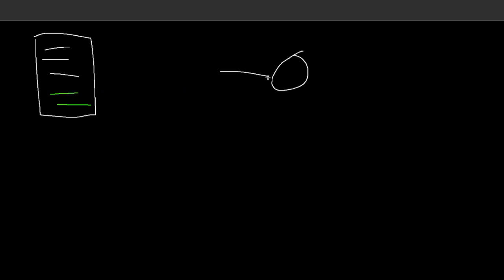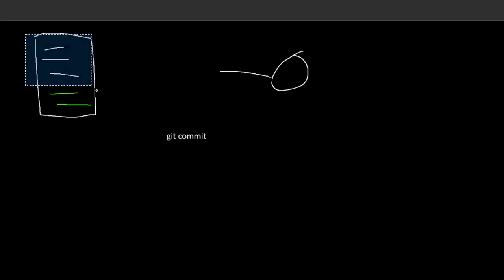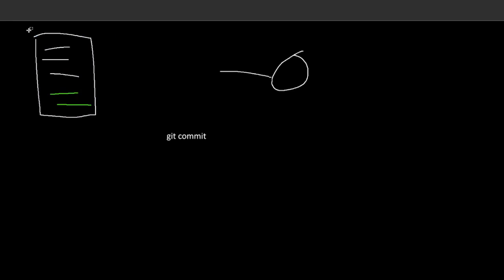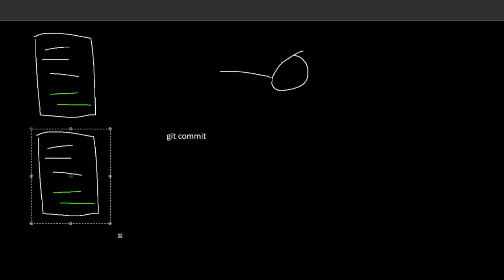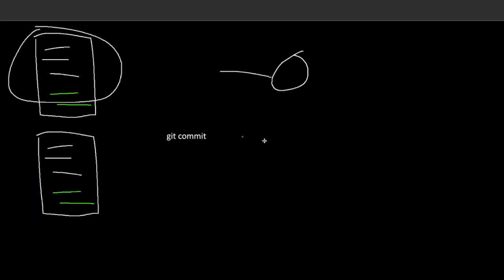You can't just create a commit with git commit right away, because there's a second stage that lets you do another thing. Say that you edited multiple files and you only want to include the changes you made to one specific file. So we have something called staging, and that goes before a commit.